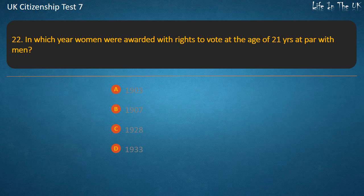Question 22: In which year were women awarded the right to vote at the age of 21, on par with men? Options: 1903, 1907, 1928, 1933. Answer: 1928.